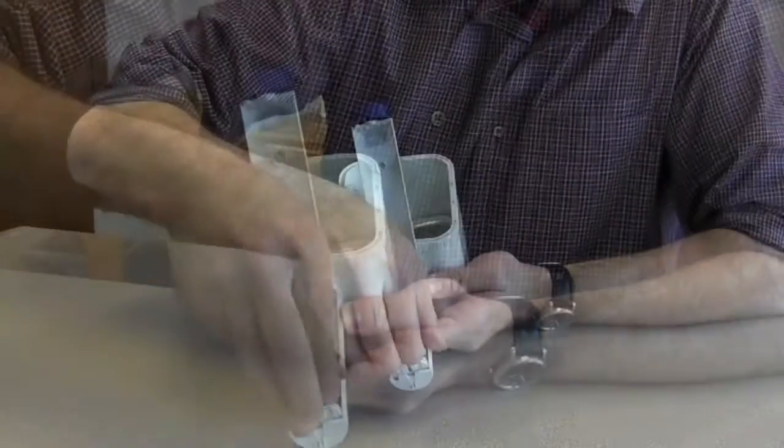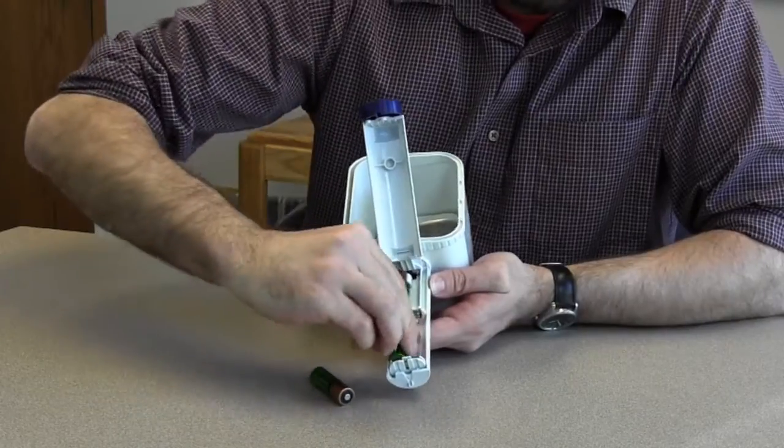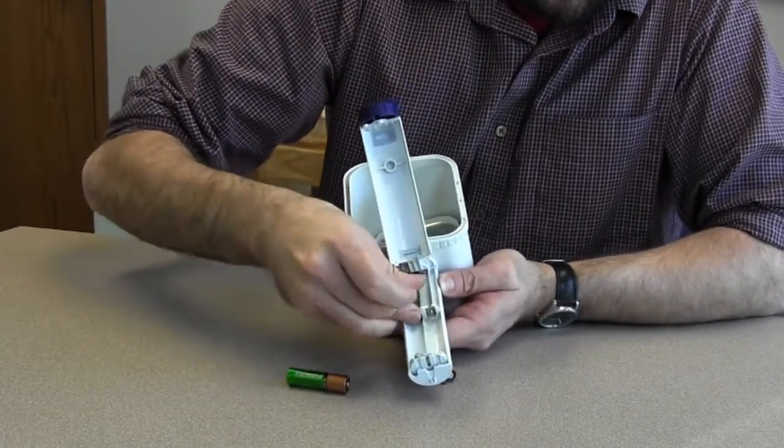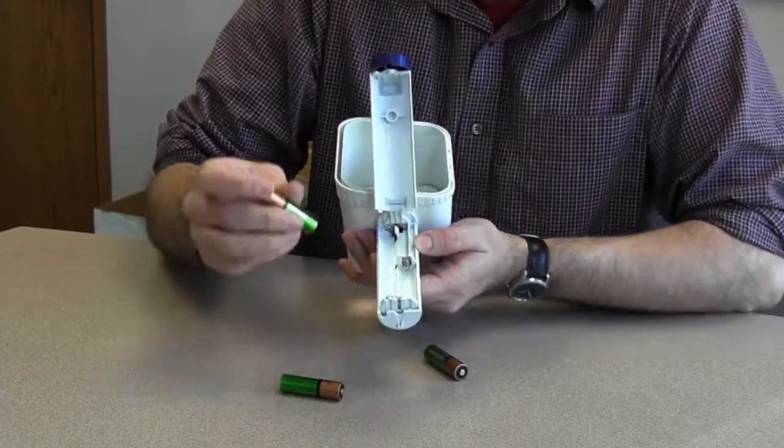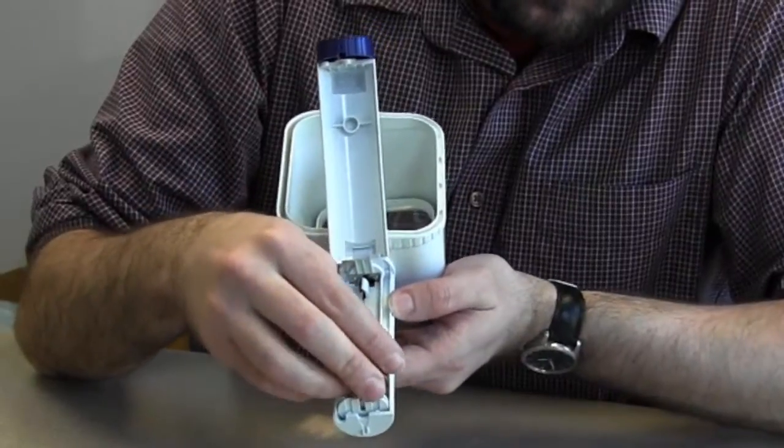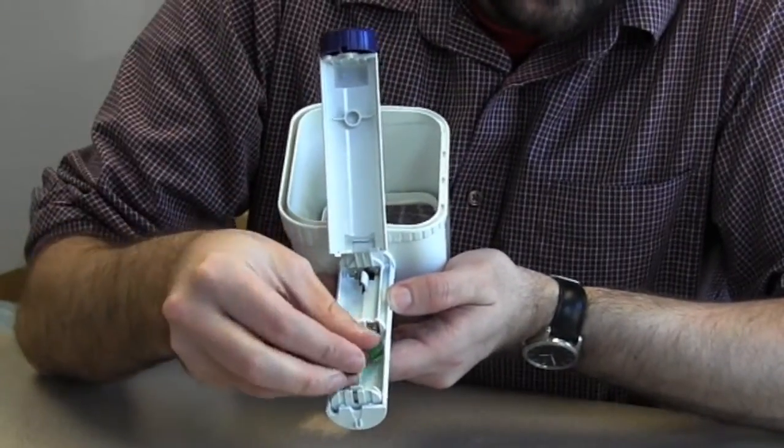We'll take the batteries out here. This has three AA batteries. We usually do the single side first. So here's the first one. Again, flat end to the spring.